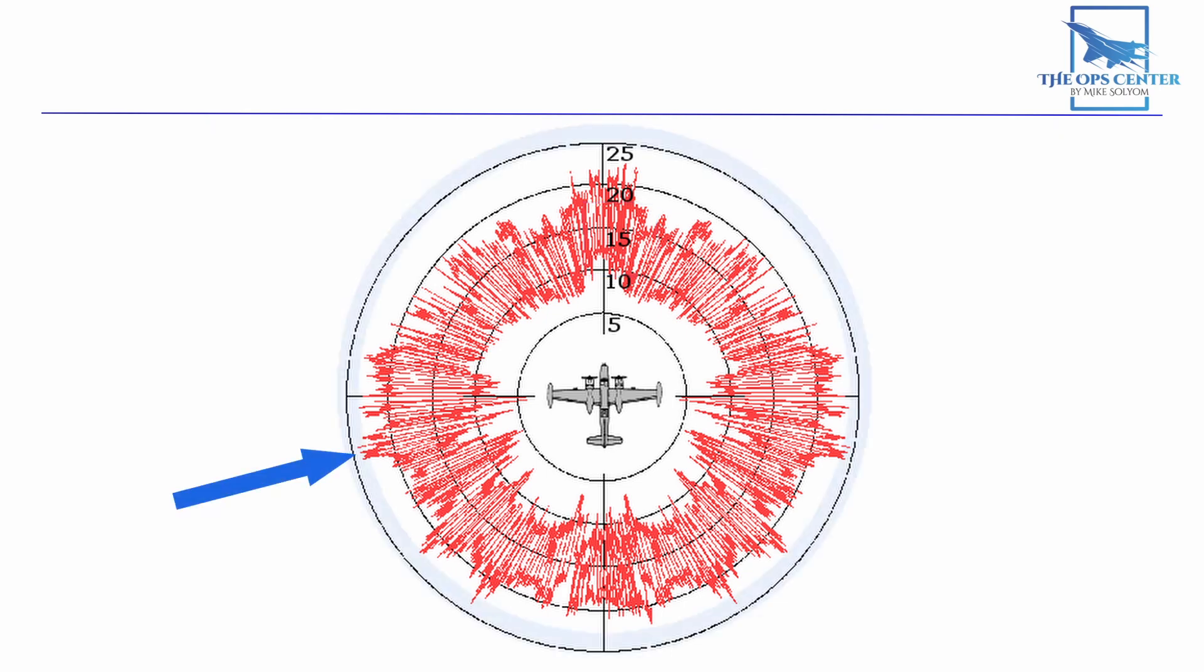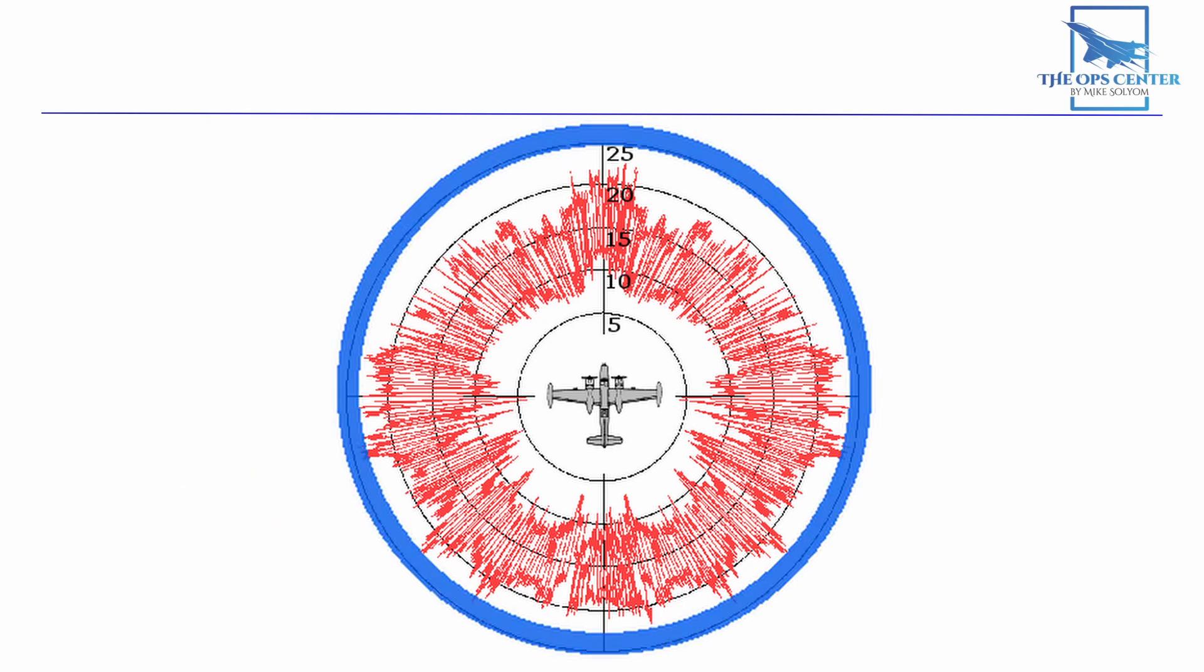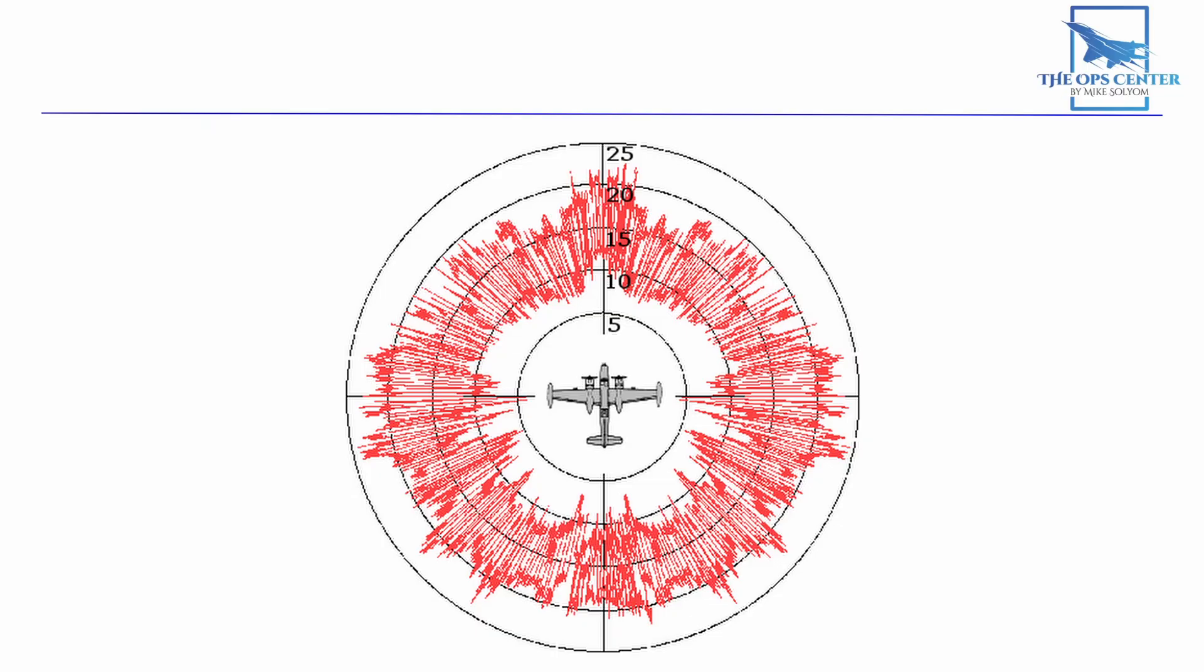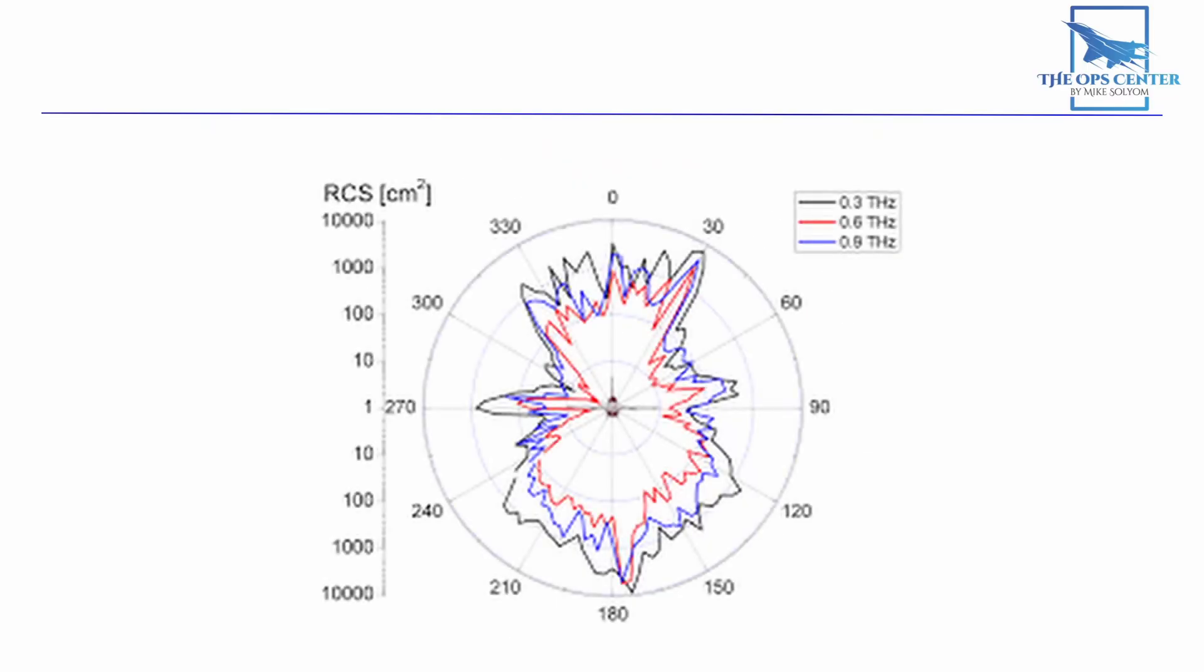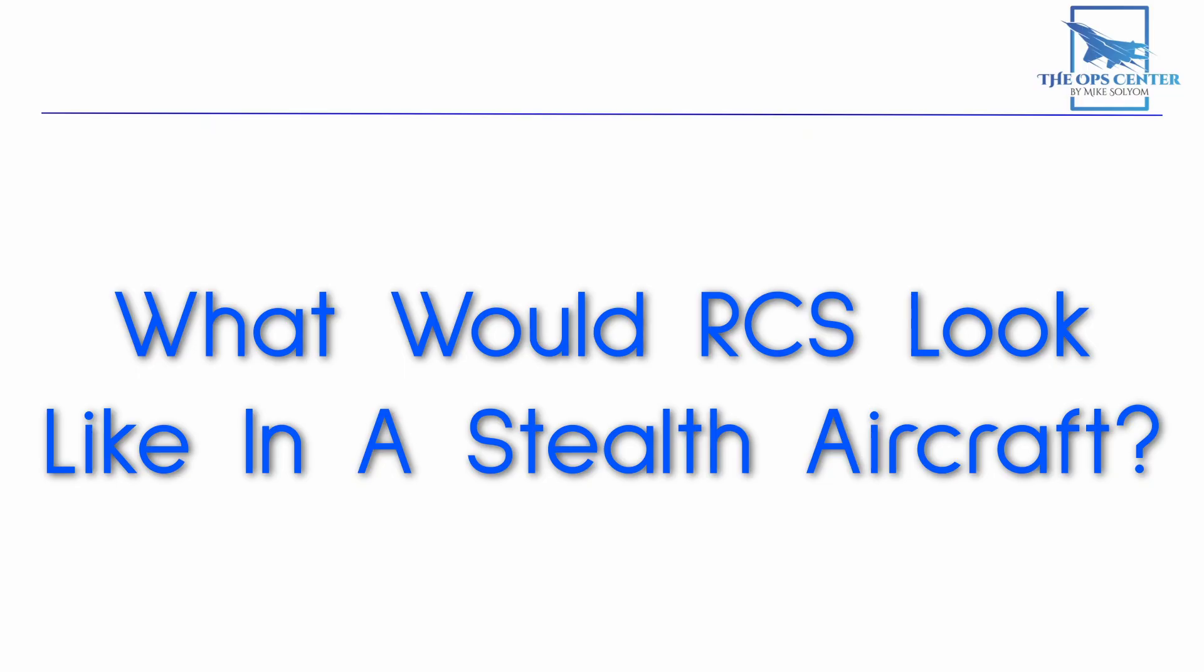This is a top-viewed 2D plot. For more accuracy, you would want additional plots showing how RCS is affected by angles above and below the horizon as well. This would give you a better idea of RCS in a three-dimensional world. Now what would all this look like for a stealth aircraft?